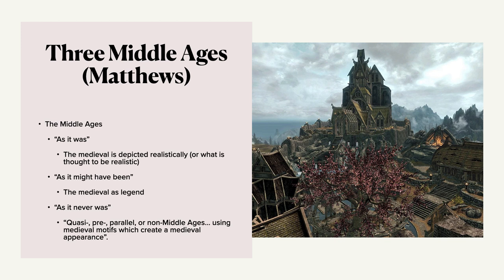I find these three categories very useful. Certainly for us, numbers two and three are probably most significant, because none of the games we're looking at in this class are actually trying to be accurate to the Middle Ages. Probably the closest to doing that is Assassin's Creed Valhalla, but even for them, perfect accuracy is not what they're shooting for — they need to be able to tell their story. I know that was a little bit heavy, but I'm hoping that by breaking these up into smaller chunks, you're not overwhelmed by any of it. What I would focus on is making sure you understood the difference between romantic and grotesque medievalism, and then the difference between the three different types of middle ages in that last category — and that should be all you really need to take forward with you.